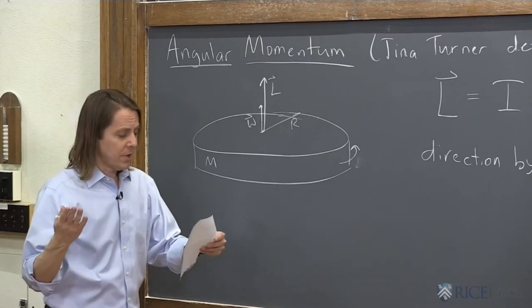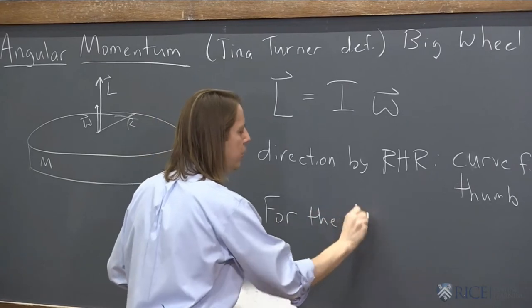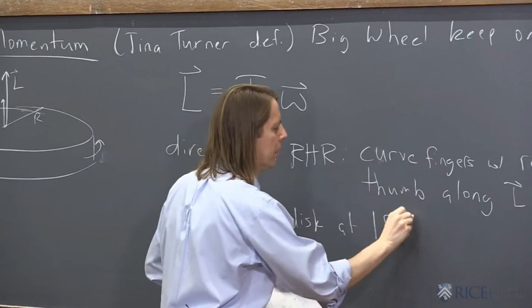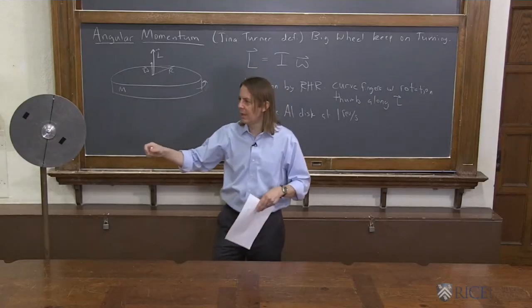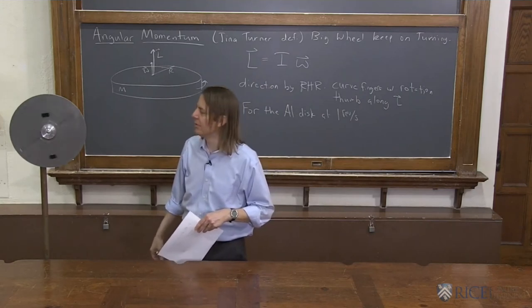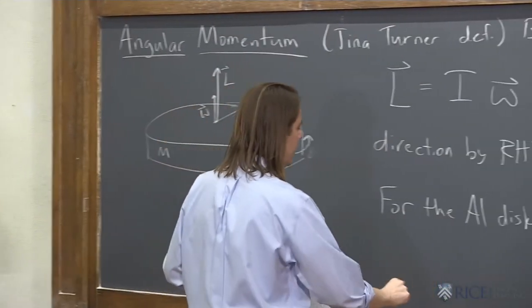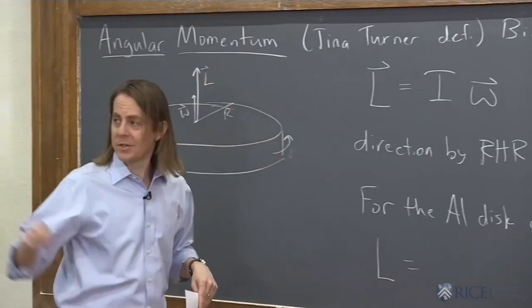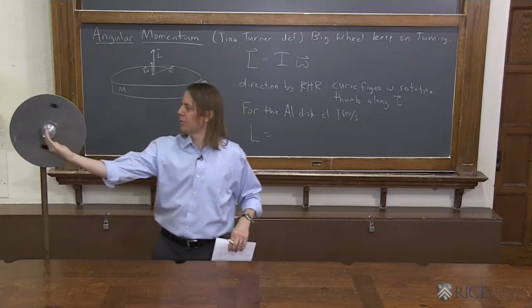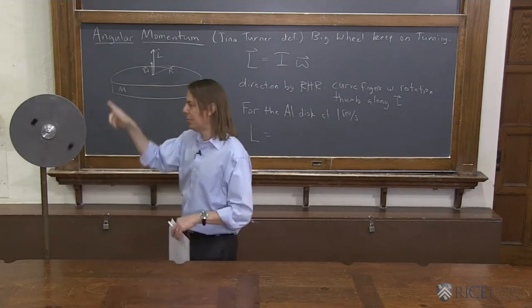So let's just calculate an L for the aluminum disk at one revolution per second. So come back to the disk here. It's going to go around about a revolution per second. One thousand, two thousand, something like that. Let's calculate its L. We'll just do magnitudes because we know the direction in this case. Let's get the direction. Right hand rule. Okay, in this case we're doing the L vector, it's pointing in to the plate, it's pointing that way.